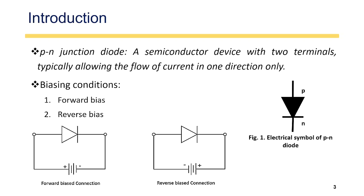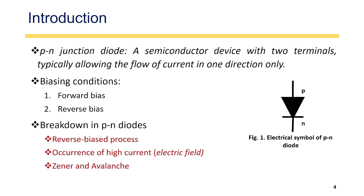When we talk about breakdown voltages or breakdown conditions, we are mainly talking about reverse bias conditions. Breakdown occurs when we apply a high amount of reverse bias voltage, and due to that, a high electric field develops across the PN junction diode, causing heavy current to flow — this is called breakdown. In a PN junction, there are two types of breakdown: one is Zener and another is Avalanche.